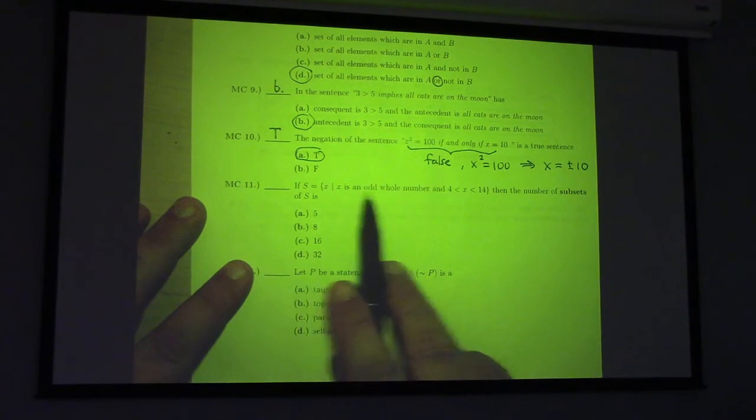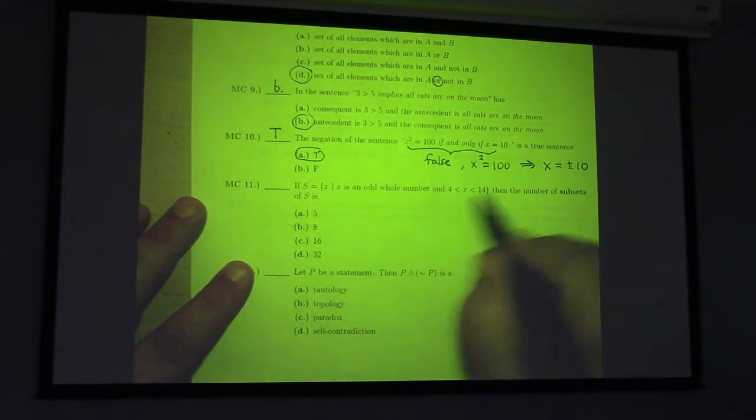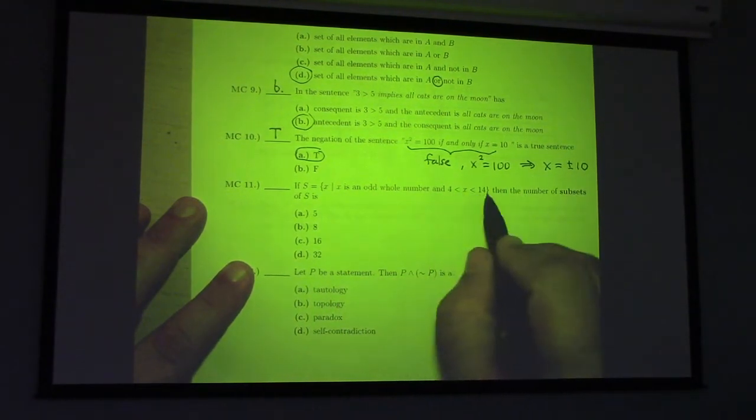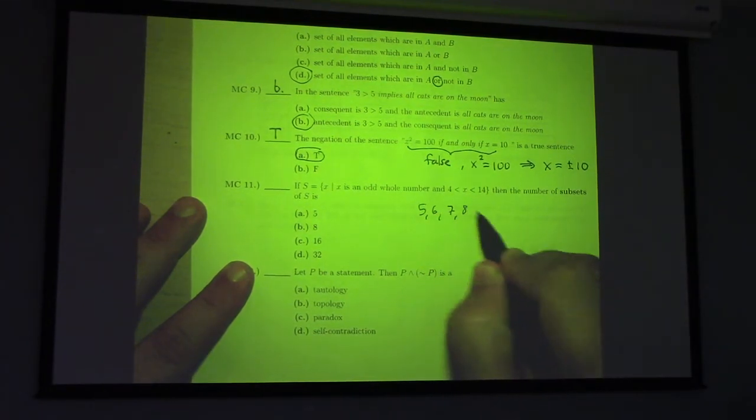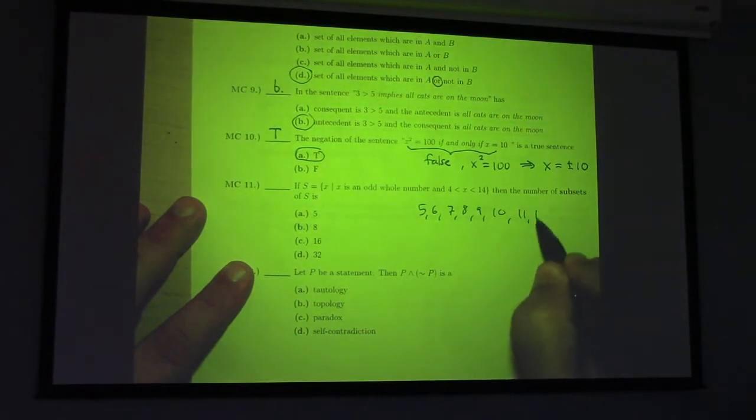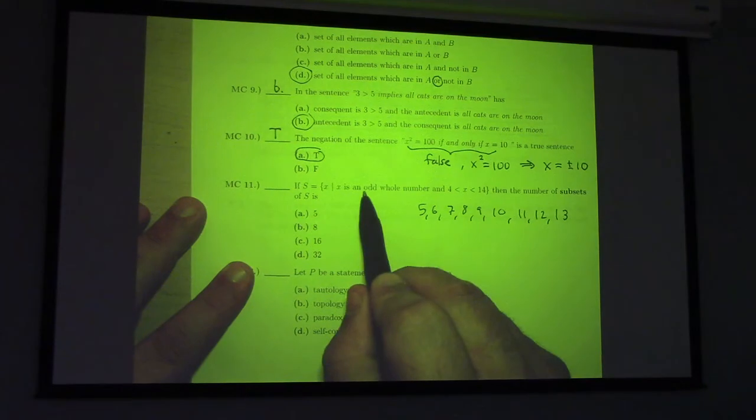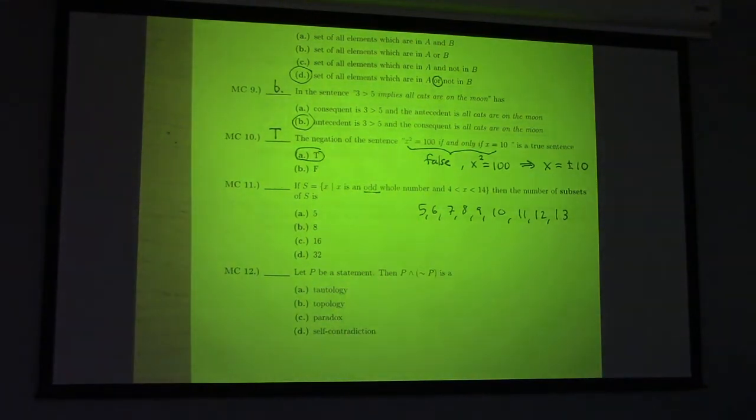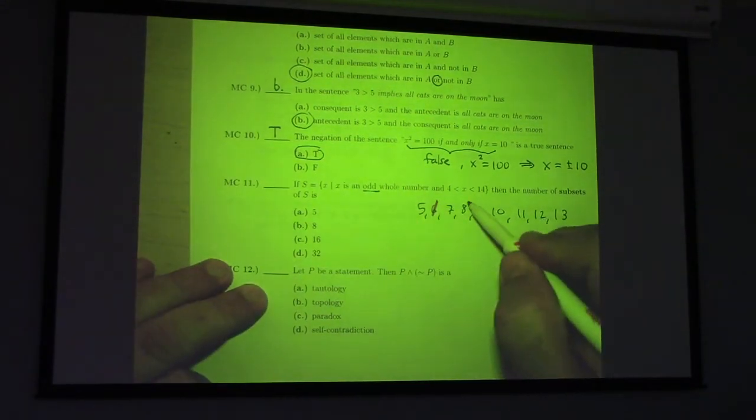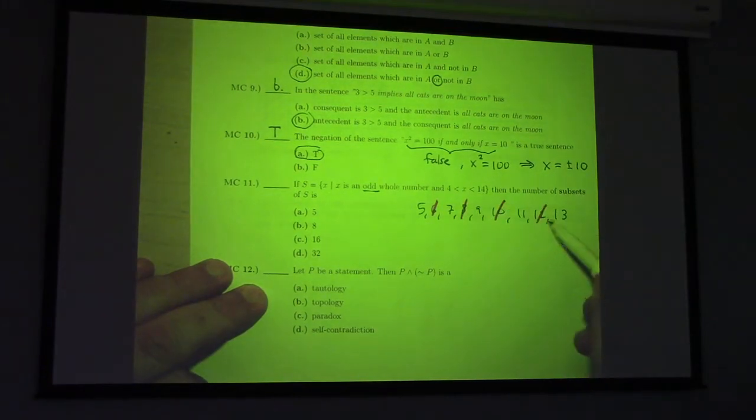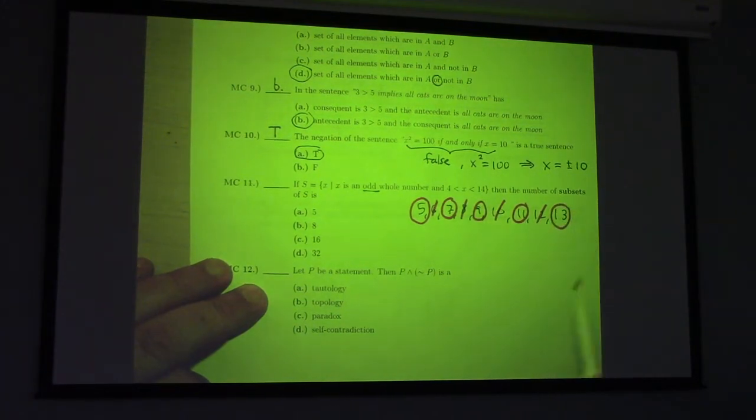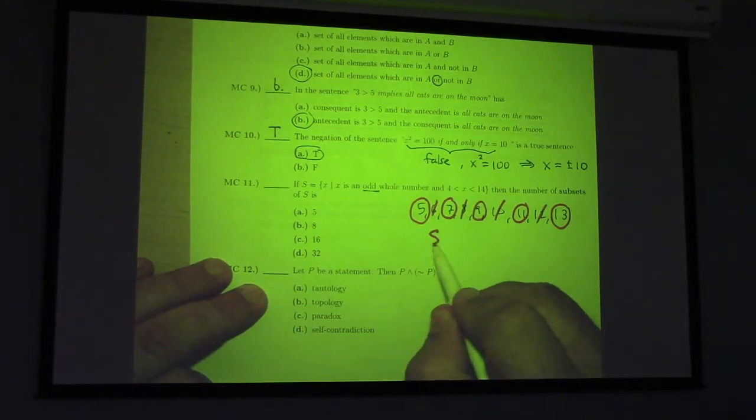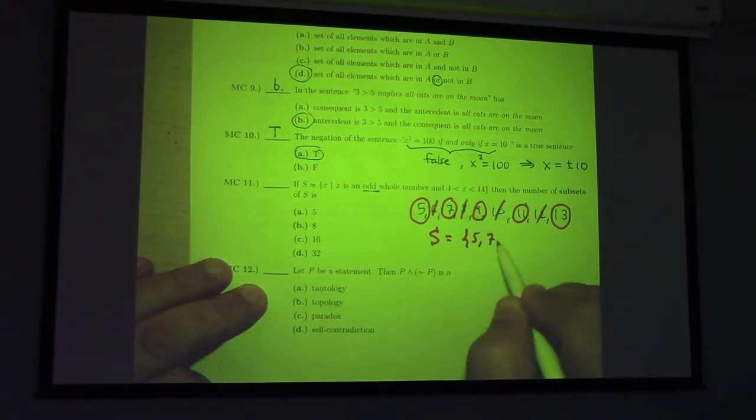So, you have an odd whole number between four and... I just list the numbers here. You get five, six, seven, eight, nine, ten, eleven, twelve, thirteen, right? But what are we looking for? Odd. So, I got to get rid of what? These are not odd, so I get rid of those. So, my odds are five, seven, nine, eleven, and thirteen. So, s is five, seven, nine, eleven, and thirteen.